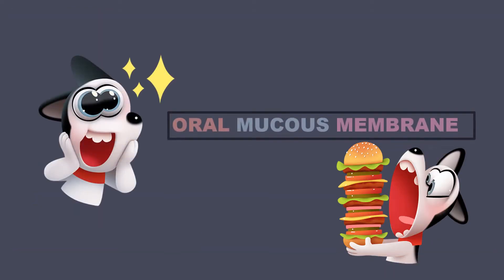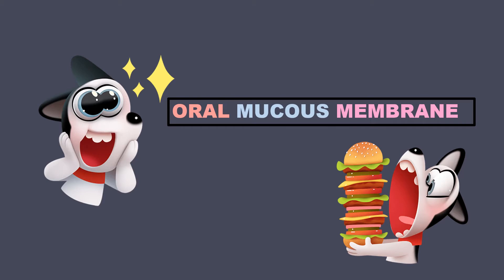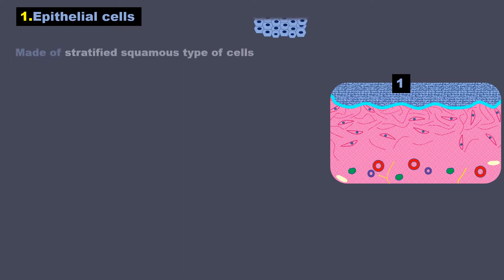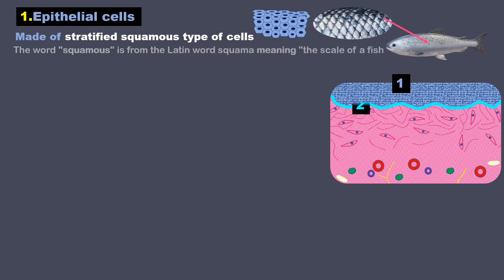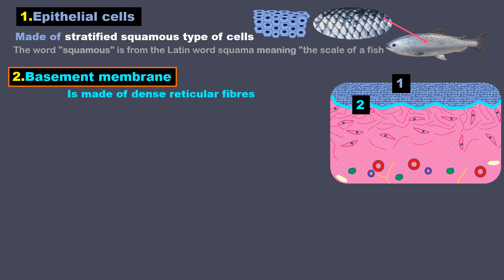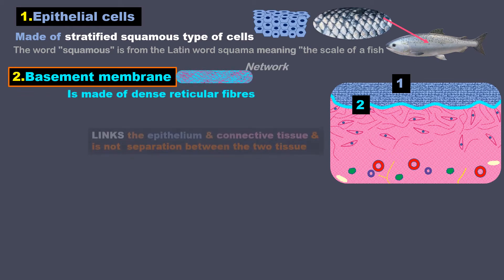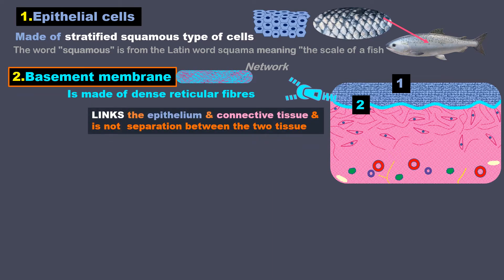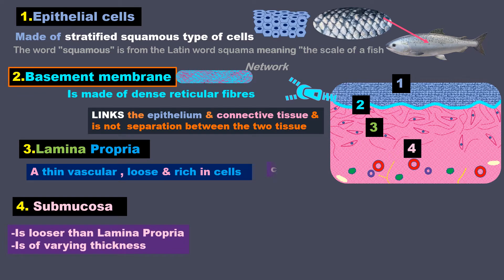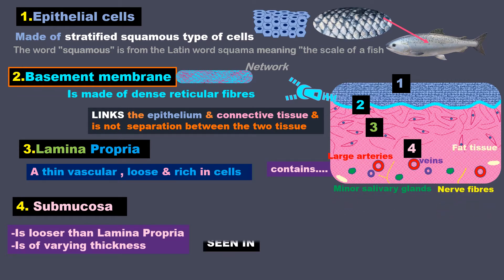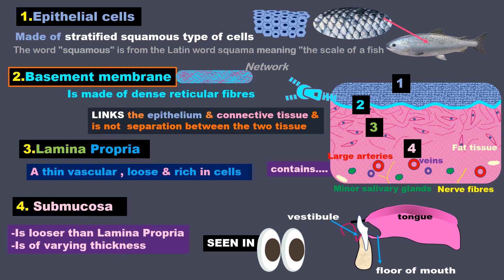The epithelium and connective tissue of the oral mucus membrane are a little different. (1) The epithelial cells are stratified squamous type — the word 'squamous' comes from the Latin word squama, meaning the scales of a fish. (2) The basement membrane is made of dense reticular fibers; reticular means a network of fibers. It links the epithelium and connective tissue and is not a separation between them. (3) Lamina propria is thin, vascular, loose, and rich in cells. (4) Submucosa — it is looser than lamina propria and of varying thickness; it contains large arteries, veins, fat tissue, minor salivary glands, and nerve fibers. It is seen in the vestibule and the floor of the mouth.